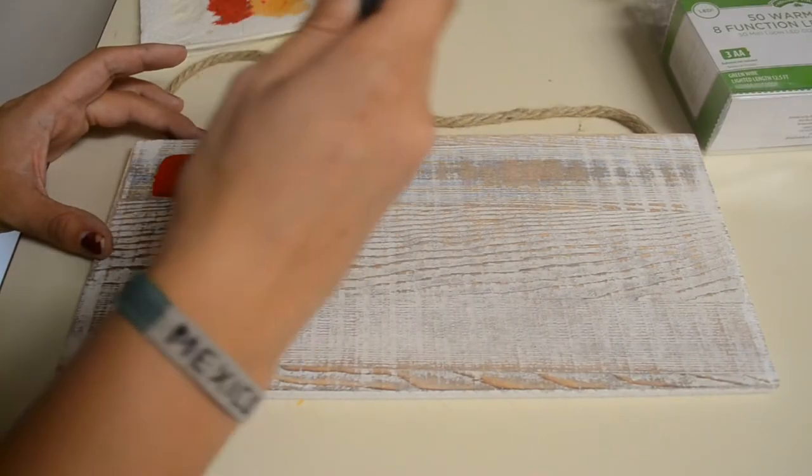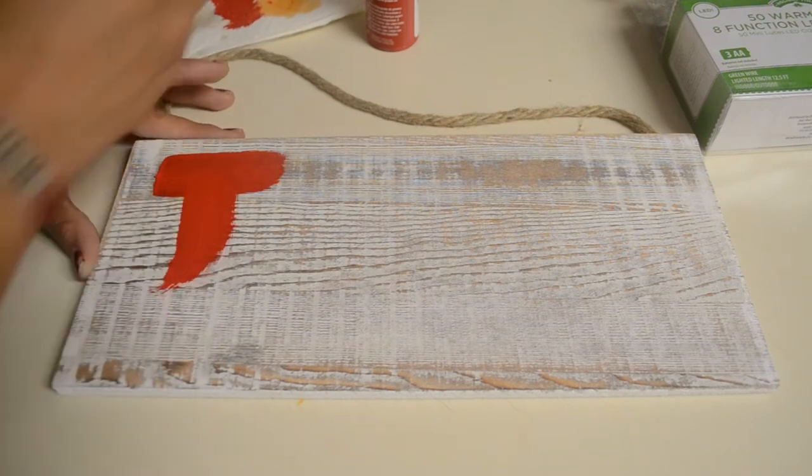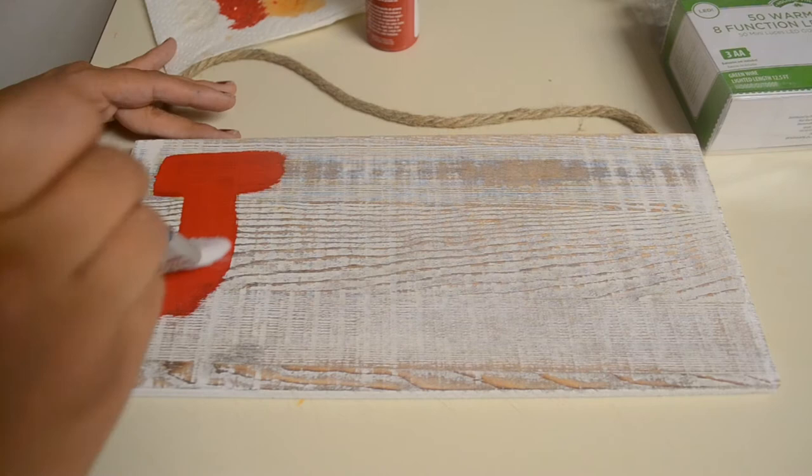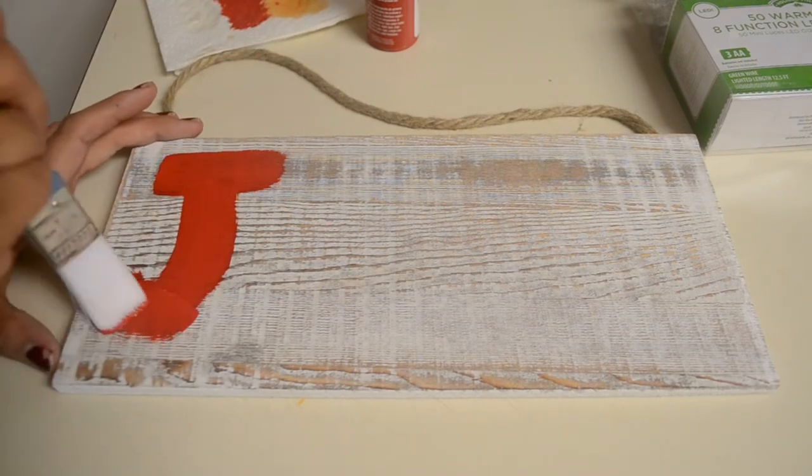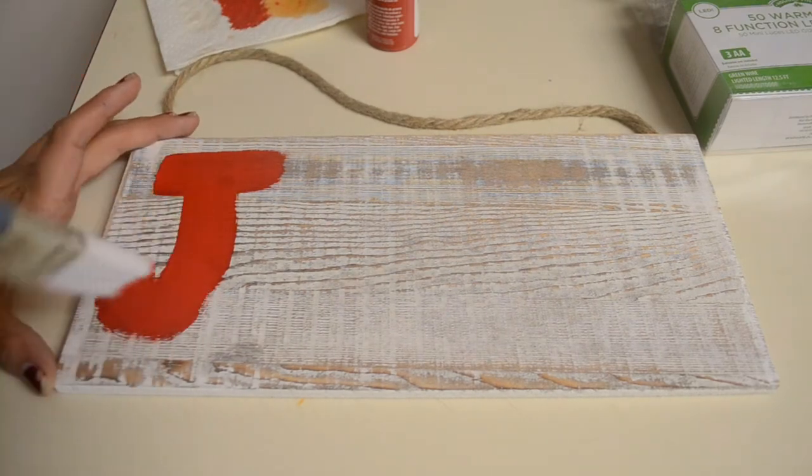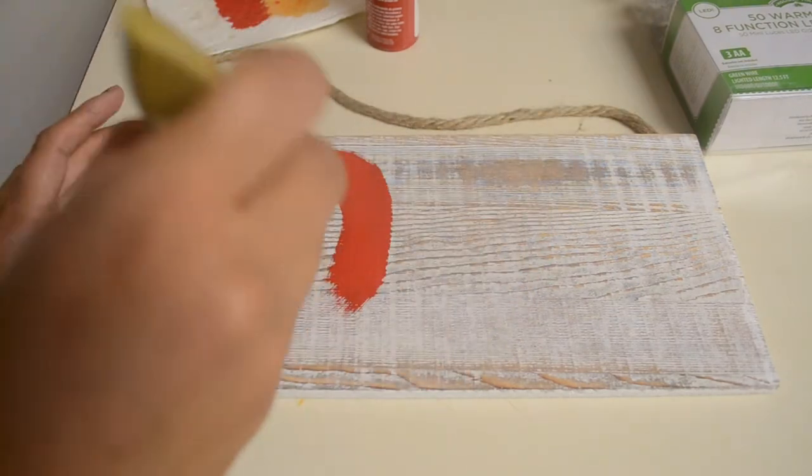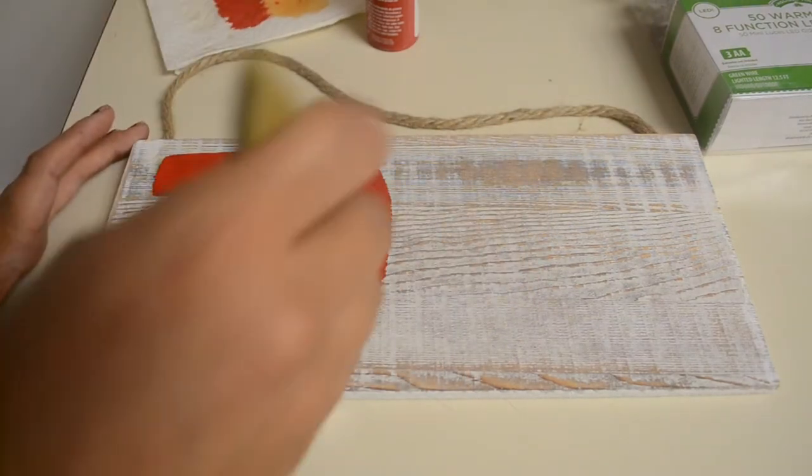First things first, you want to paint out the word jolly on your sign, or if you want to put Noelle or something else, you know, it's your sign, whatever your heart desires. If you want to do it in a special sort of writing that you're not used to, I would suggest going over this first with a pencil, kind of sketching it out, and then painting your letters on. I just free-handed it because I was pretty confident and doing some easy lettering.